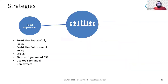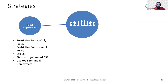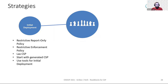During the interviews, and especially during the coding task, we observed many different strategies for handling CSP problems. For the initial deployment, some participants started with a policy in report-only mode — where the policy is not enforced but violations are reported — while others started with an enforced CSP, resulting in a loss of functionality. Tools for initial deployment, for example to generate an initial allow list, were often mentioned or used during our study.